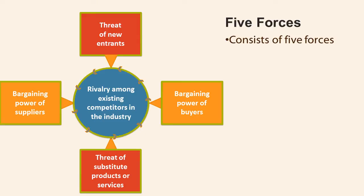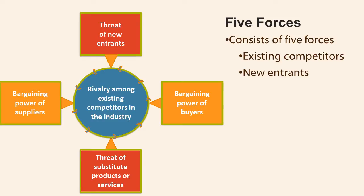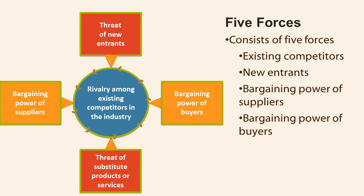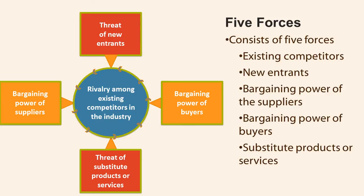The model identifies five competitive forces which affect the company's competitive position. These are: existing competitors in the industry, threats of new entrants coming into the industry, bargaining power of suppliers, bargaining power of buyers, and threats of substitute products or services — that is, different products or services that fulfill the same needs as our product.